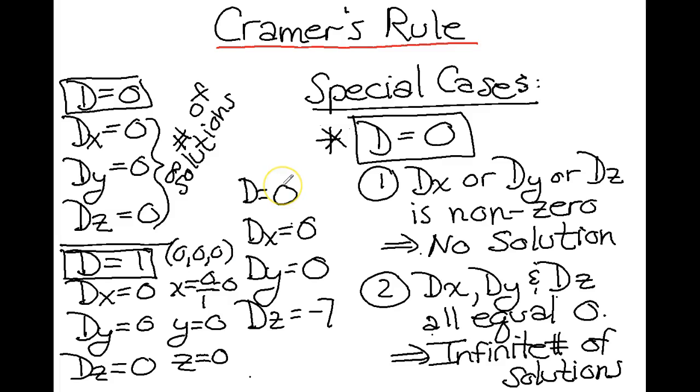And lastly, this last case over here, I check out my d, and d is zero in this case. And as I go down the list, dx is zero, dy is zero, but then I come across dz, and it is non-zero. Because d is zero and dz is non-zero, this case is a no-solution case.